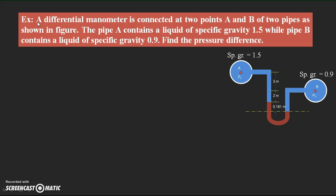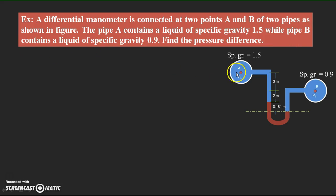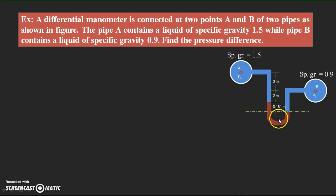Try to read the problem. The problem is given as: a differential manometer is connected at two points A and B of two pipes. Pipe A contains a liquid of specific gravity 1.5 while pipe B contains a liquid of specific gravity 0.9. Based upon these, height differences have been taken in the two limbs of the manometer, and we need to find out the pressure difference between points A and B.